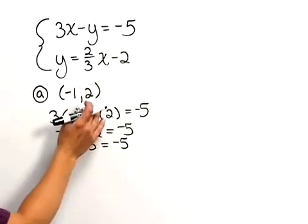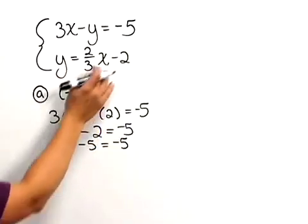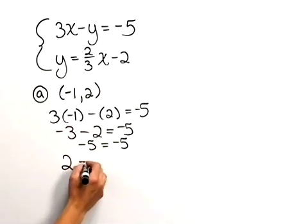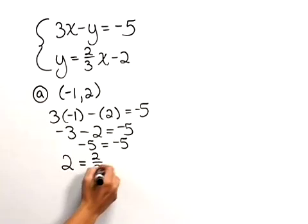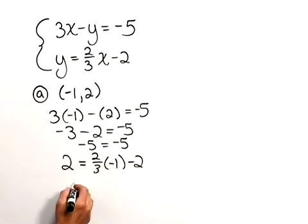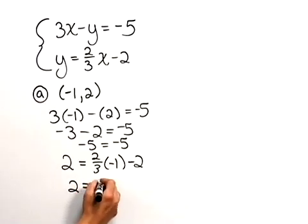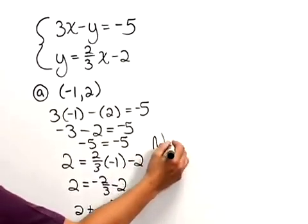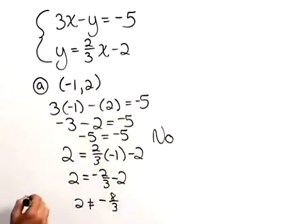Let's check the second one. We will replace the y with 2 and the x with negative 1. That gives us 2 equaling 2 thirds times negative 1 minus 2, which is 2 equals negative 2 thirds minus 2. This is going to end up being negative 8 thirds which is not equal to 2. So we would say no, this is not a solution to that system.